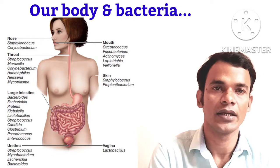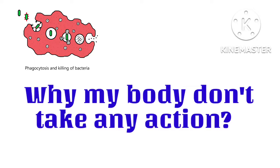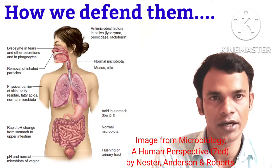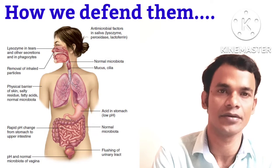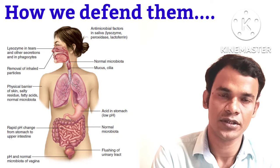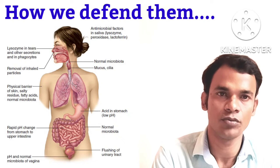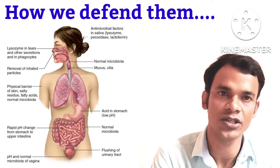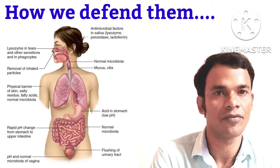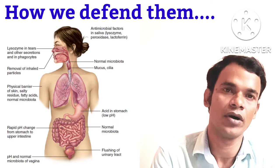You will be surprised to know that in our body, for each and every single cell, 10 microbes are present. Each day our body comes in contact with a limitless number of microbes, but the majority are either removed or destroyed before they colonize and start dividing. Our own defense mechanisms are always active to clear foreign pathogens. Some clever microbes have evolved to escape our attention, while some only gain access when our immune system is weak.